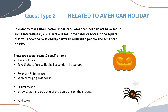Quest Type 2 of our app is related to American holidays. To help users better understand American holidays, we have set up some interesting Q&A. Users will see cards or notes around the square showing the relationship between Australian people and American holidays. Those notes will be placed on trees. When users read the notes, they will gain knowledge about American holidays, and other notes may contain questions about Halloween or American festivals. Answering questions correctly will earn a stamp. Specific tasks include: visiting a café, taking five ghost selfies in five seconds on Instagram, and throwing rings around a pumpkin on the ground.